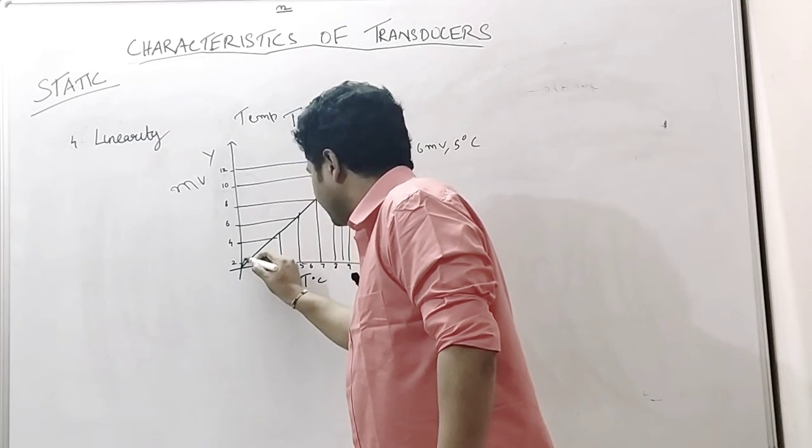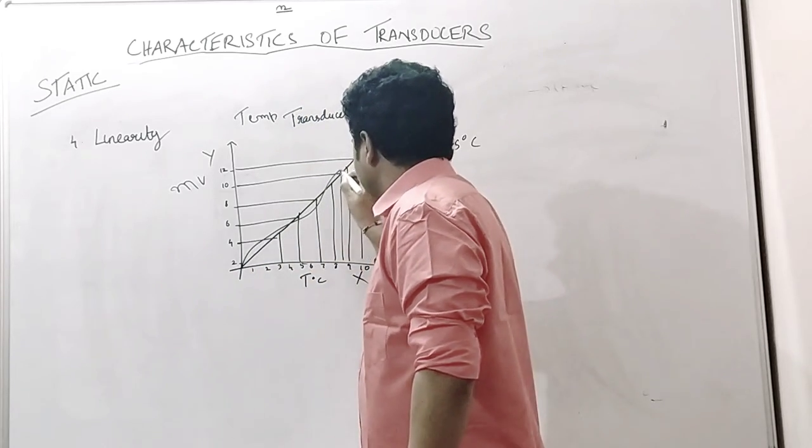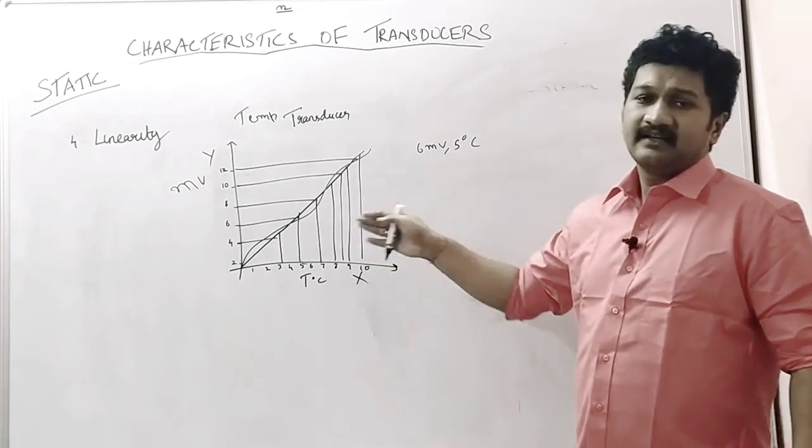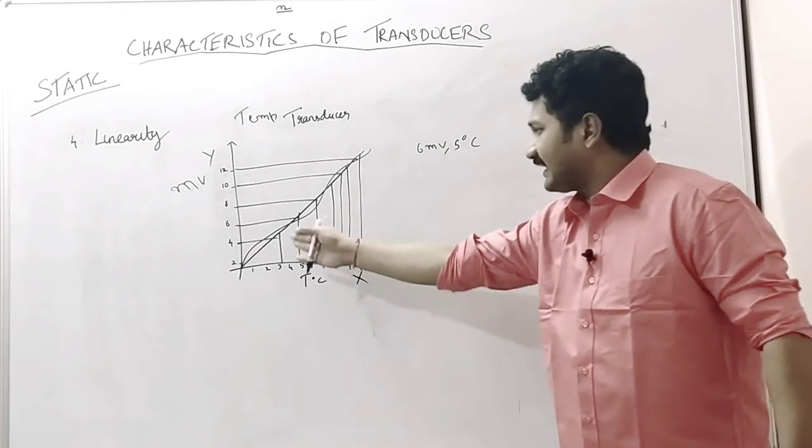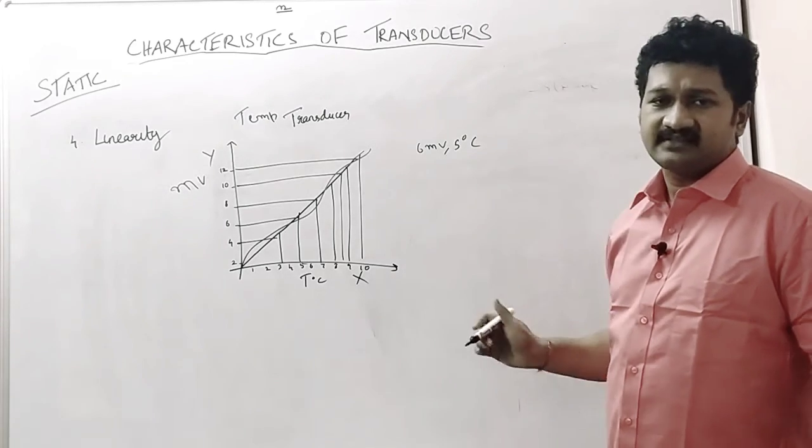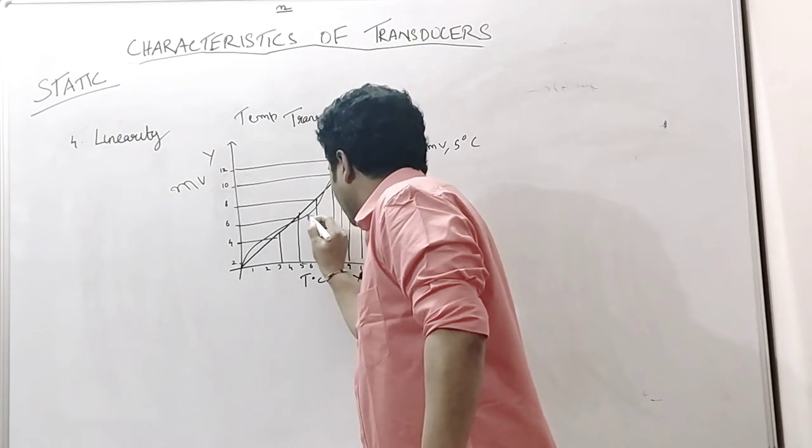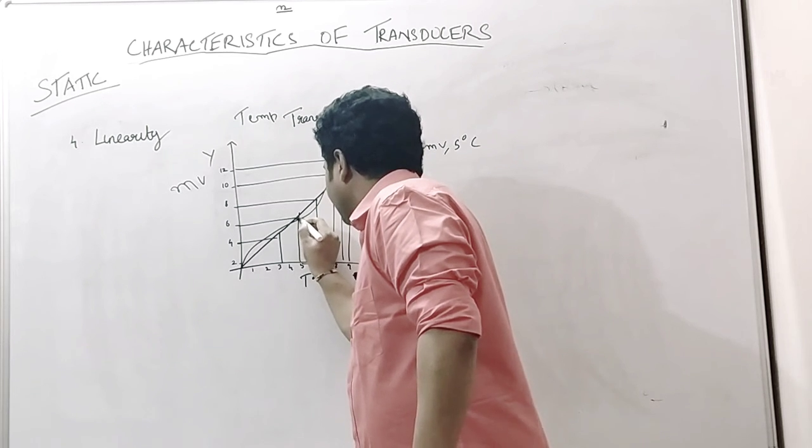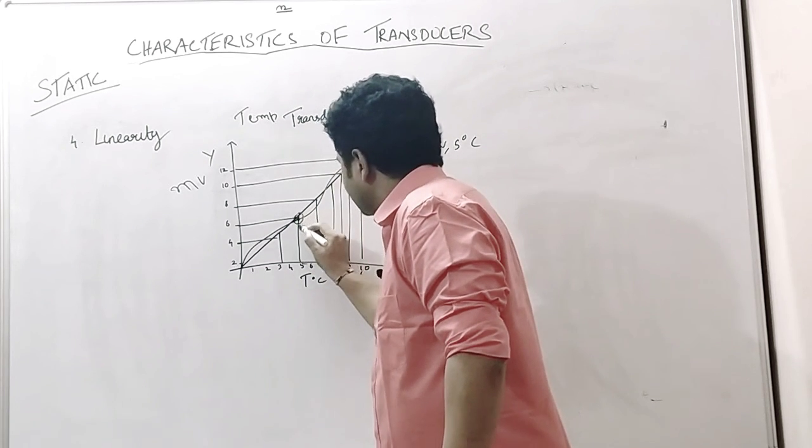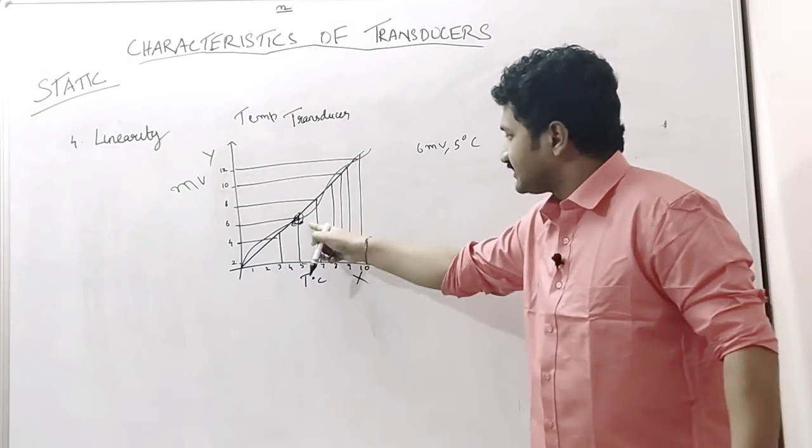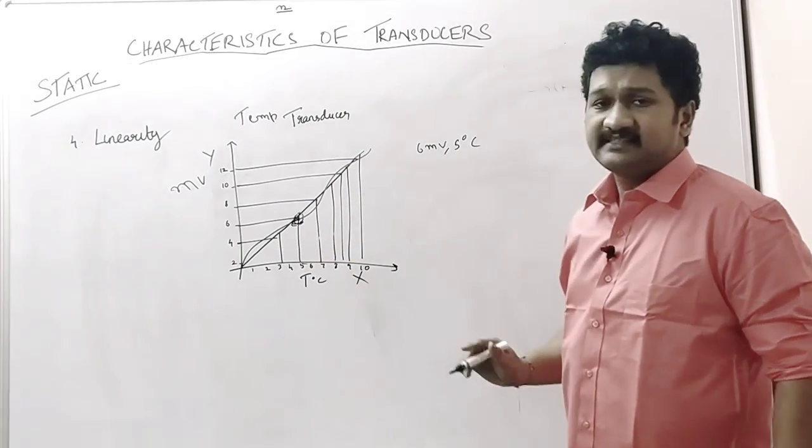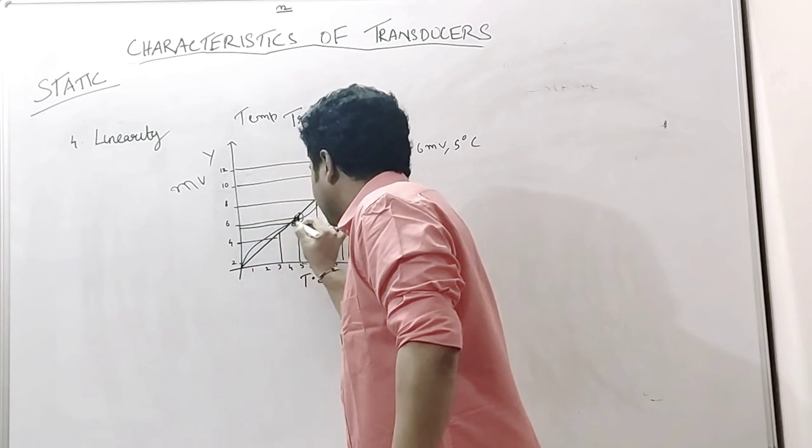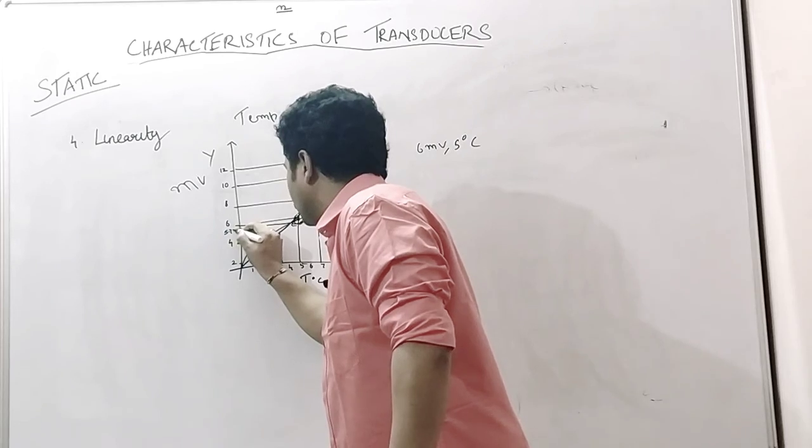This curve, we are getting in this fashion. Here, can we say that the second transducer characteristics is linear as that of the first? See the point where it is 5 degree Celsius. This point is here, which is deviated. This deviation is observed for 5 degree Celsius. It is not the same as 6 millivolt output. It is somewhat below, at some 5.7 millivolt.